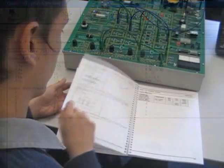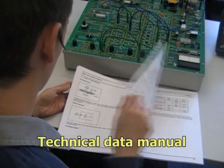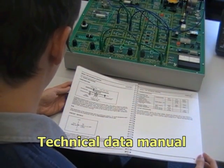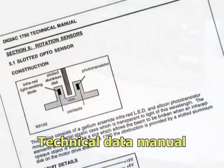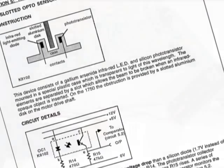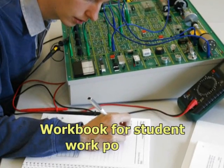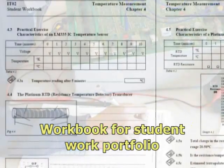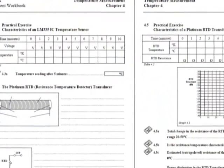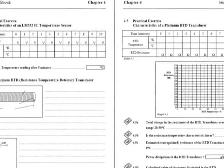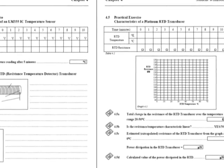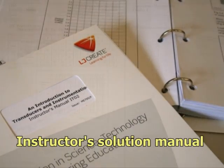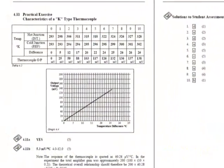A 130-page technical manual provides operational and technical data for all the transducers and signal conditioning circuits. A separate workbook means students can maintain their own portfolio of work by recording notes, experiment results, calculations, graphs, and conclusions. Solutions to questions and workbook activities are provided in an instructor's manual.